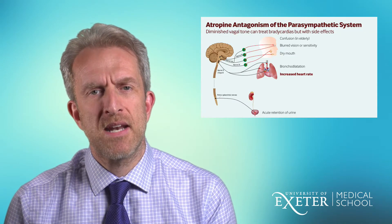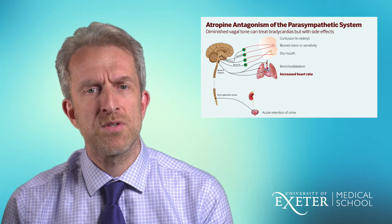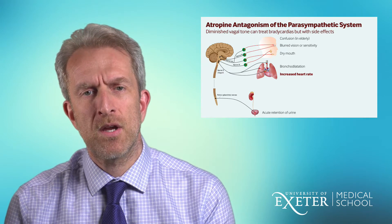Atropine is an antagonist of the parasympathetic nervous system. When we administer it in a patient with bradycardia, we can expect the heart rate to increase because it diminishes tone in the vagus nerve and increases excitability at the SA node and AV node. However, side effects include confusion in the elderly, blurred vision, dry mouth, and — particularly in elderly male patients — we may also precipitate acute urinary retention.